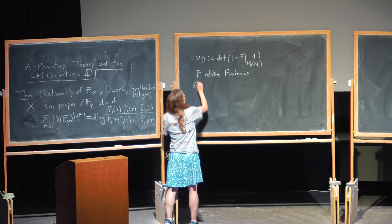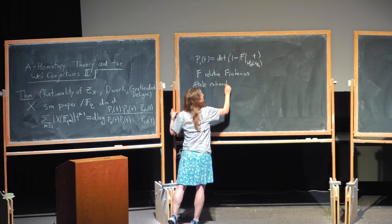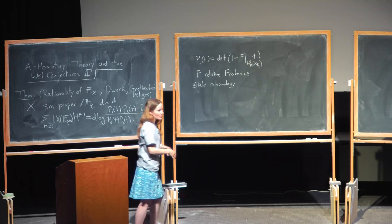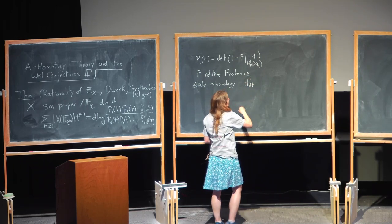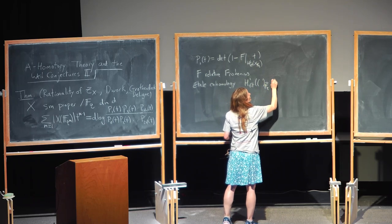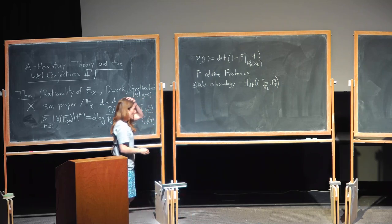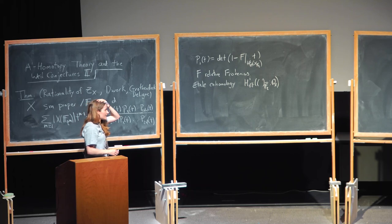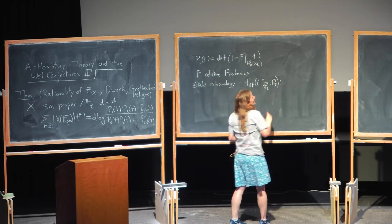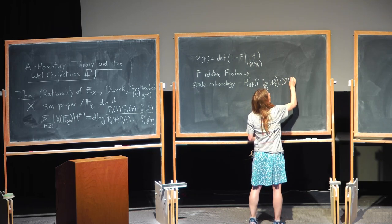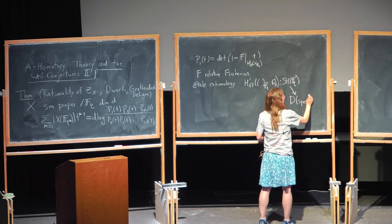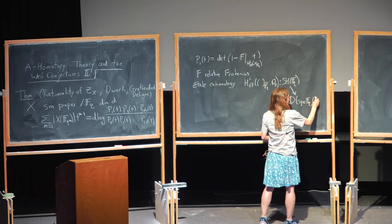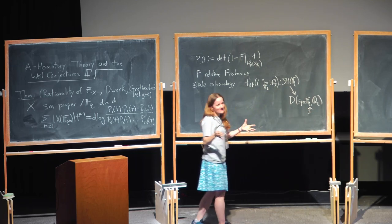We have étale cohomology, which are derived functors of push-forwards from an abelian category of étale sheaves. So we've got H^i étale with Q_ℓ coefficients. This is a functor that takes products of schemes to the tensor product of their cohomologies, and determines a functor to a derived category of ℓ-adic sheaves, chain complexes, with an action of the Galois group.